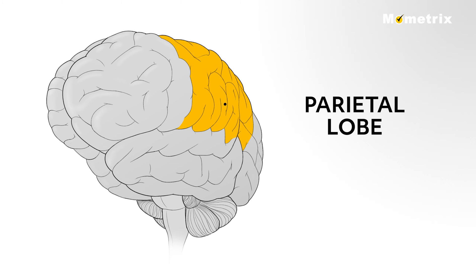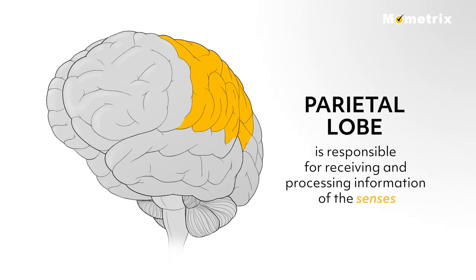The parietal lobe, found on the crown of your head and directly posterior to the frontal lobe, is responsible for receiving and processing information of the senses.